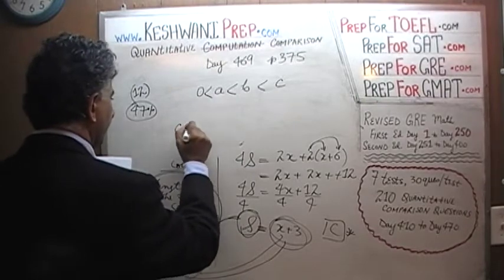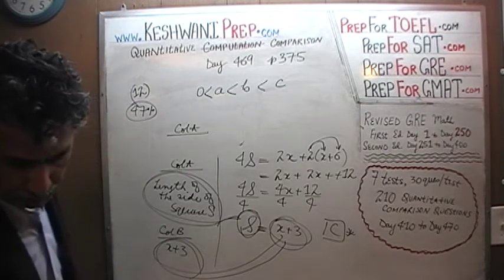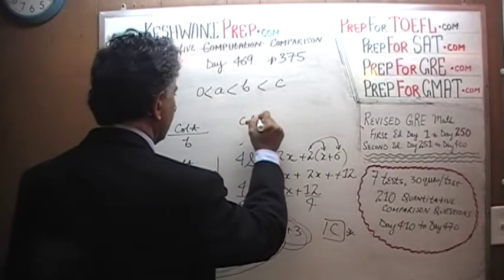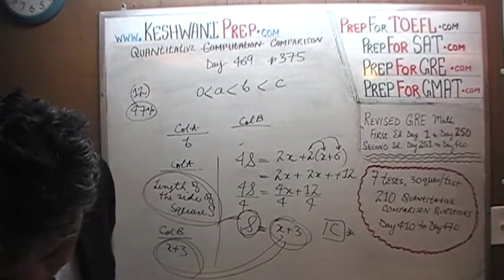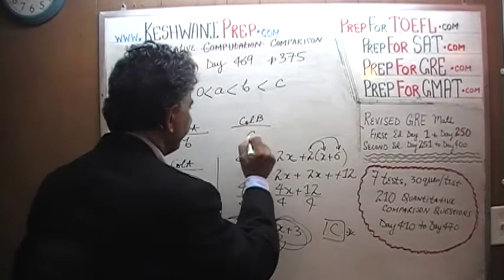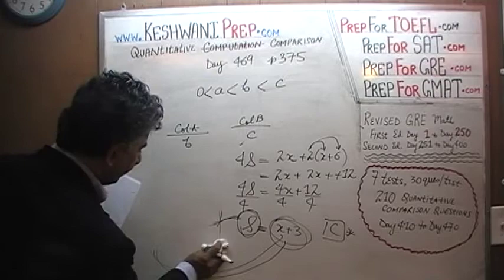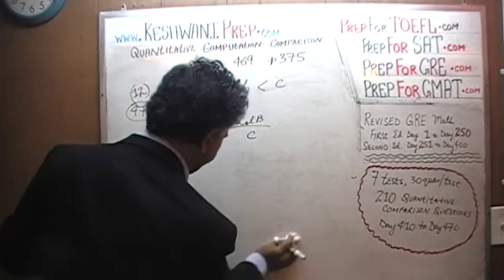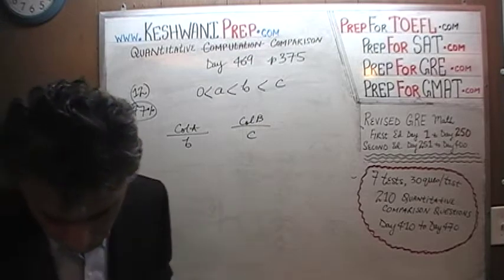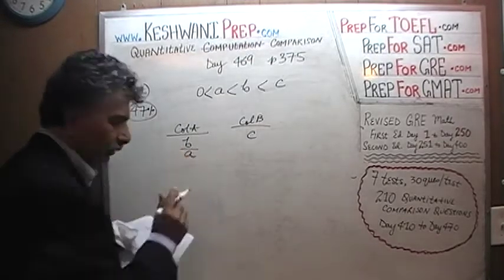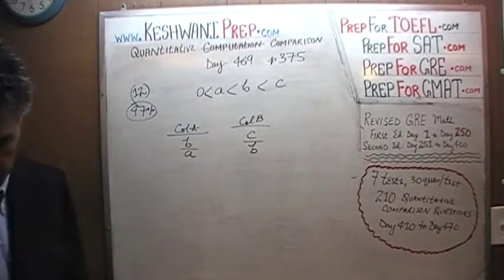What we are being asked to compare: in column A we have B over A, and in column B we have C over B. I have the problem now on the blackboard the way it is supposed to be.